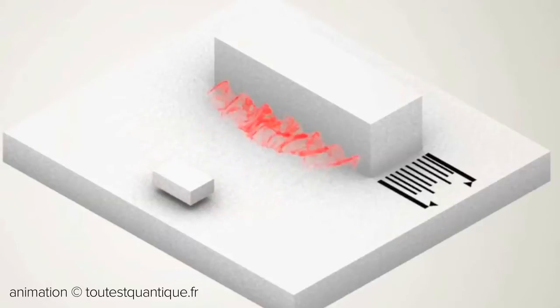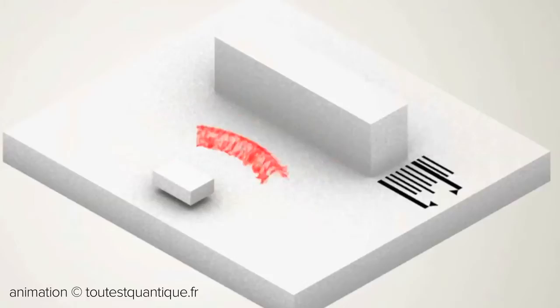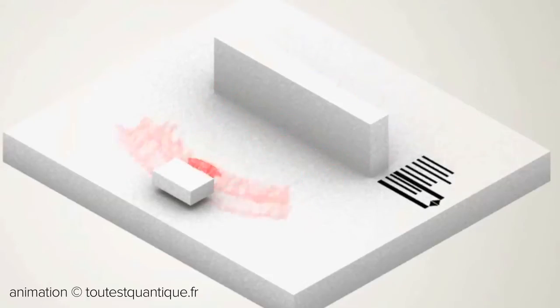But if the barrier is thin enough, the electron may sometimes exhibit wave-like properties and pass through. The thinner the barrier, the more likely the electron is to pass through.